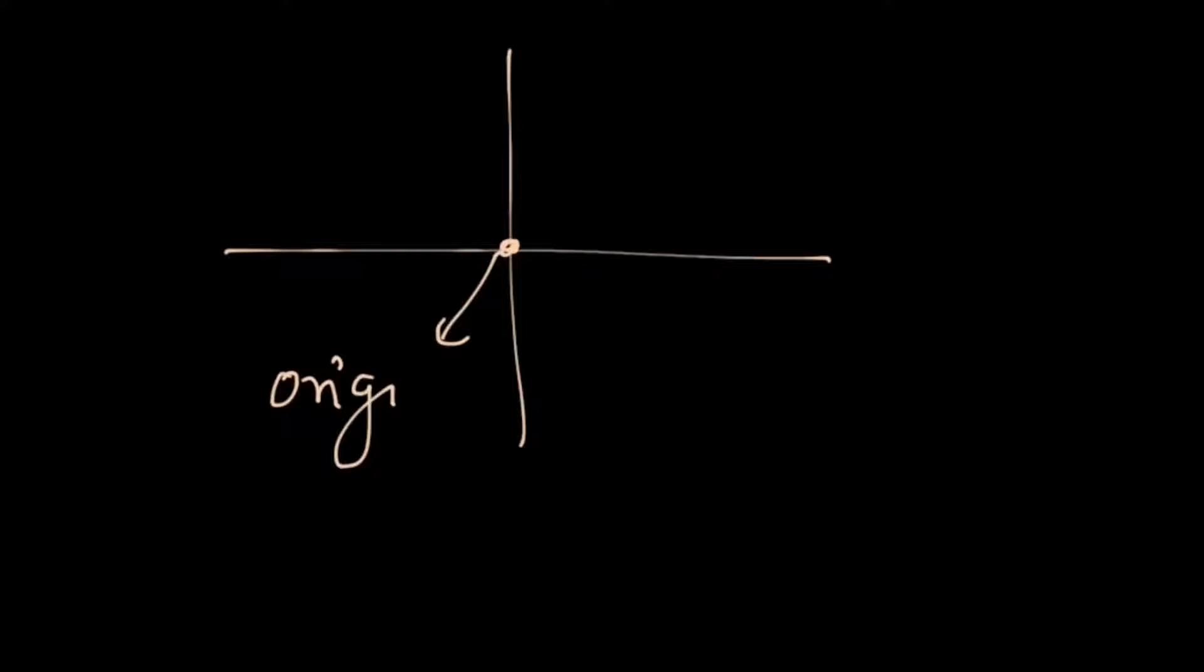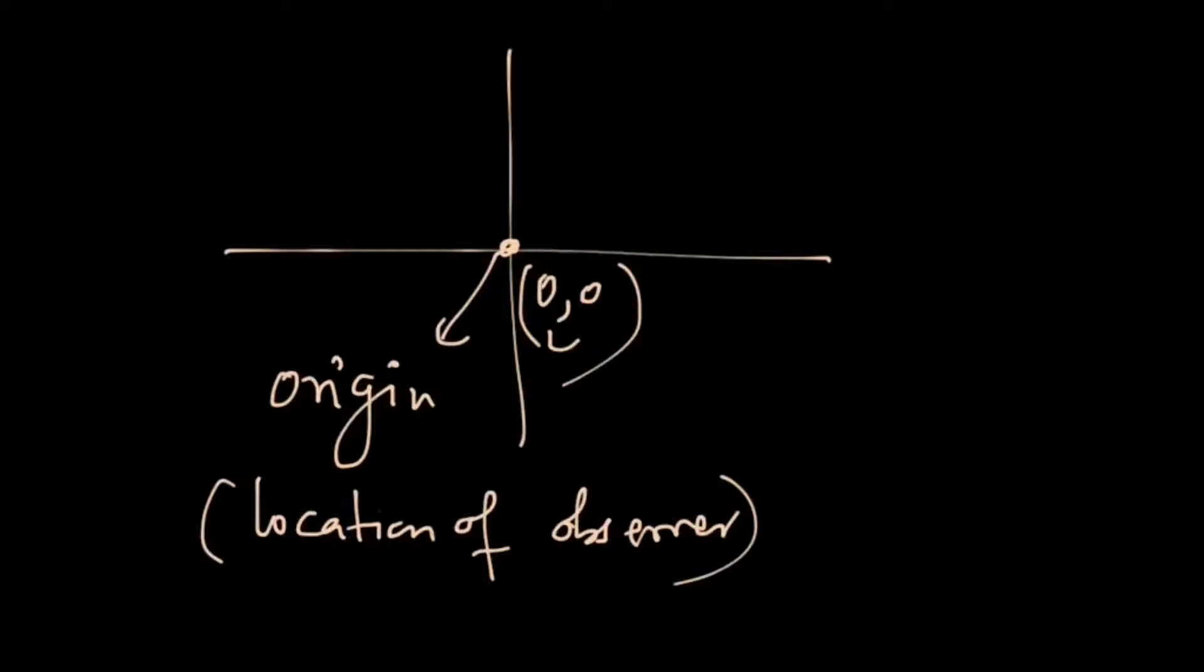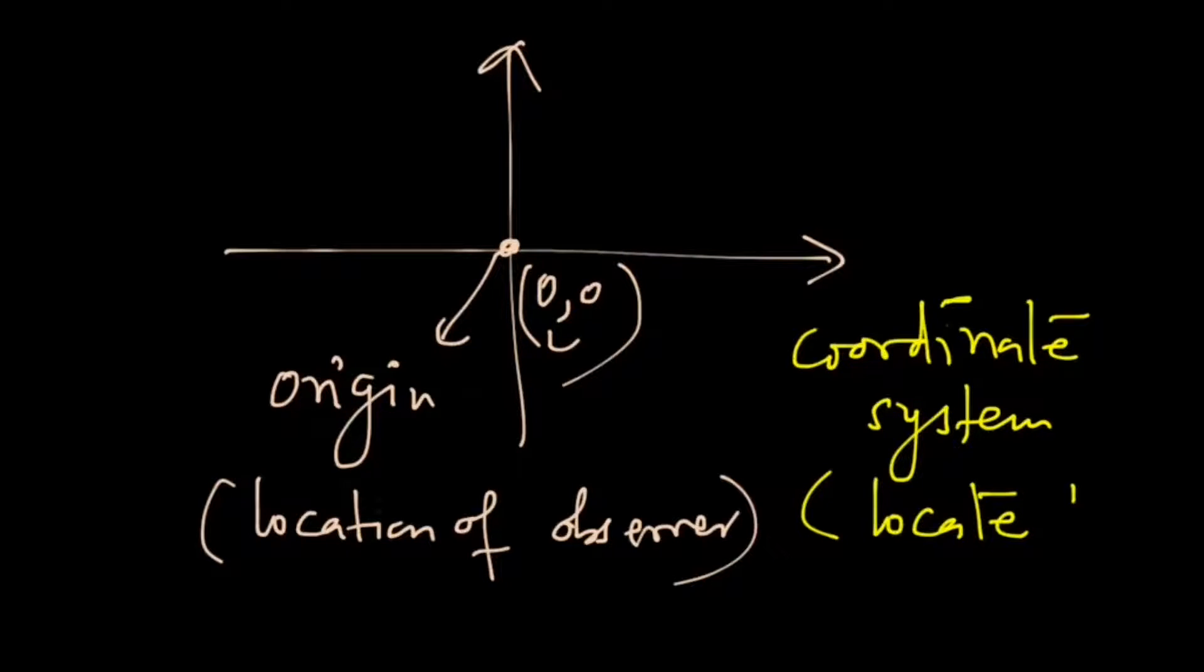So what is origin? Origin is the place where the observer sits and sees everything. So you can define the origin as the location of observer. And look at these two lines that I have drawn along with the origin. These lines together with the origin form what we call the coordinate system.